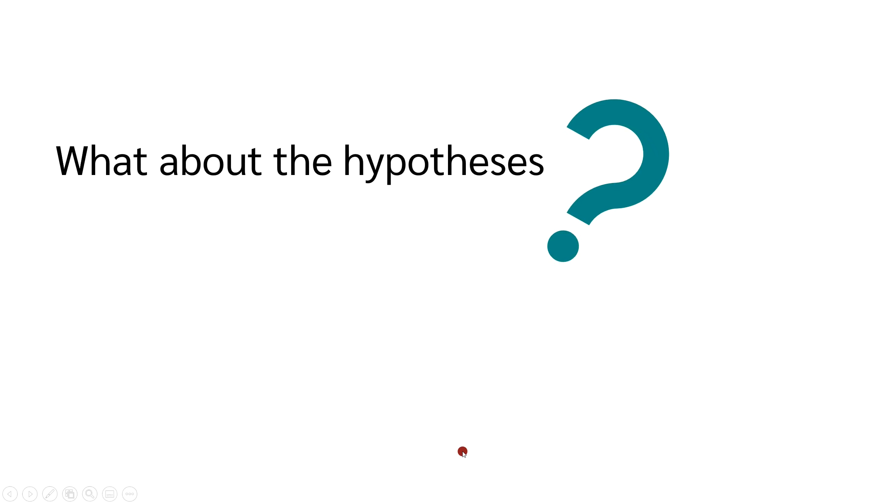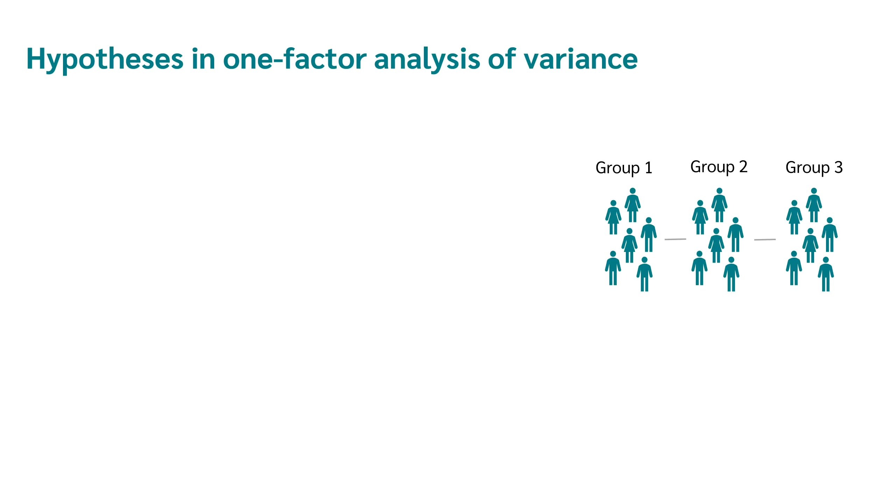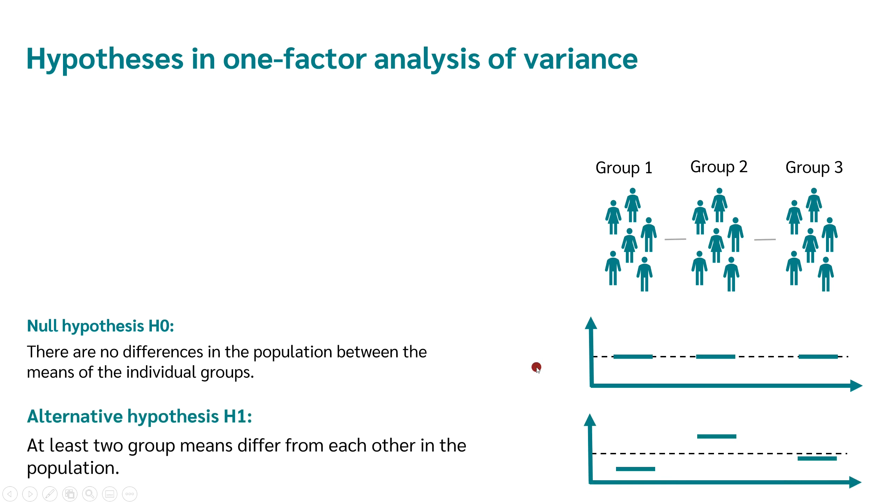But what about the hypotheses? In the case of the analysis of variance, the null hypothesis is that there are no differences between the means of the individual groups. We have our individual groups of which we can calculate the mean in each case and our null hypothesis is that there is no difference in the mean in the population. The alternative hypothesis H1 is that there is a difference between at least two group means. Therefore, our null hypothesis assumes that there is no difference and the alternative hypothesis says that there is a difference.